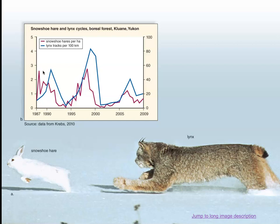The Canada lynx feeds on snowshoe hares and other small rodents and birds, and studies revealed how the two populations cycle frequently. Investigators initially thought the presence of the lynx was the only factor driving the cycling of the hare population. However, they since learned that the decline of the snowshoe hare is also accompanied by low growth and low reproductive rates, which would be indicative of a food shortage. So the hare population cycle actually spans three trophic levels: the predator, the prey, and the food source for the prey.